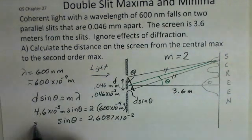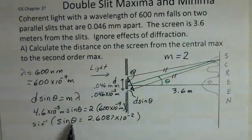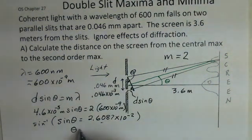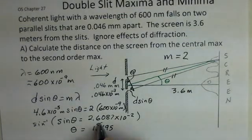But you take inverse sine of both sides. We've done something like this before. We'll cancel off the sine function with inverse sine here. We'll take the inverse sine of this number. And I came up with theta of 1.495 degrees, rounding off a little bit at this point.